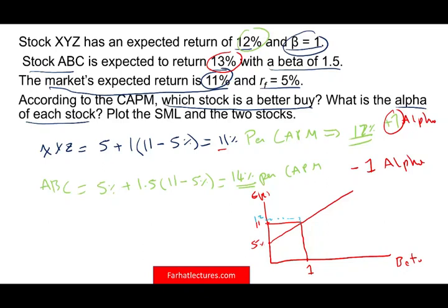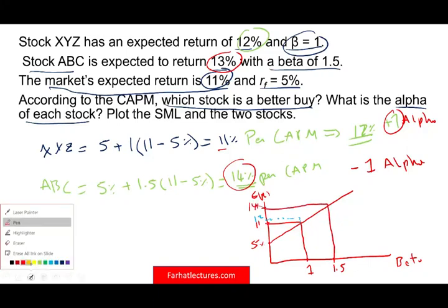So this is what it should be. But what happened is beta of 1, the return was 12%. Okay? This is for the first stock. The second stock, the beta is 1.5 per CAPM. Per CAPM, it should have been 14%. So this is going to be right here. So it should have been 14%. But what actually happened, this stock is expected to earn only 13%.